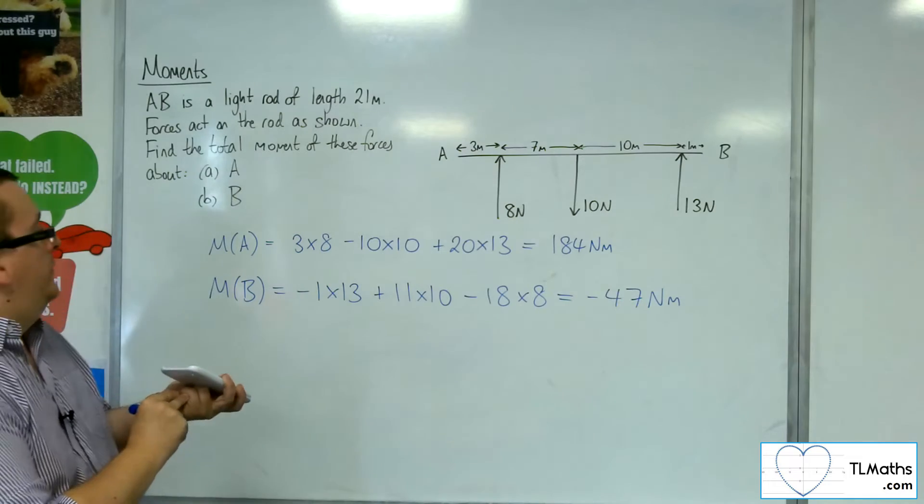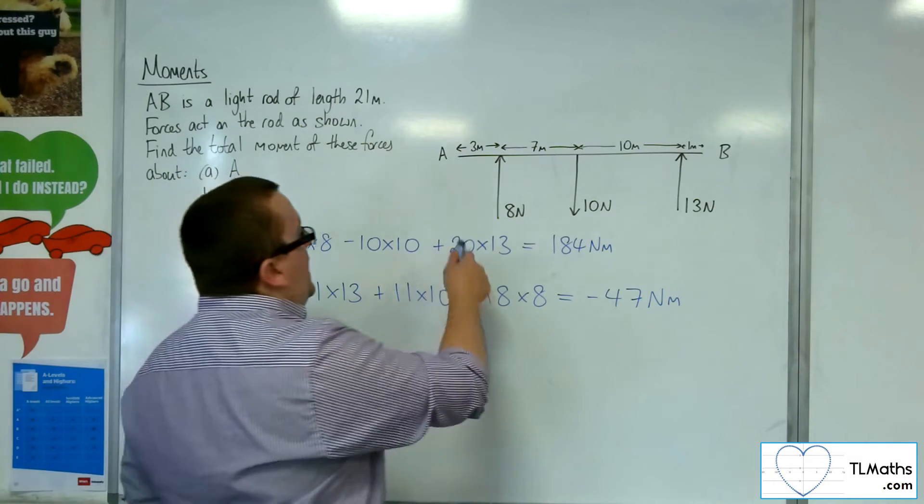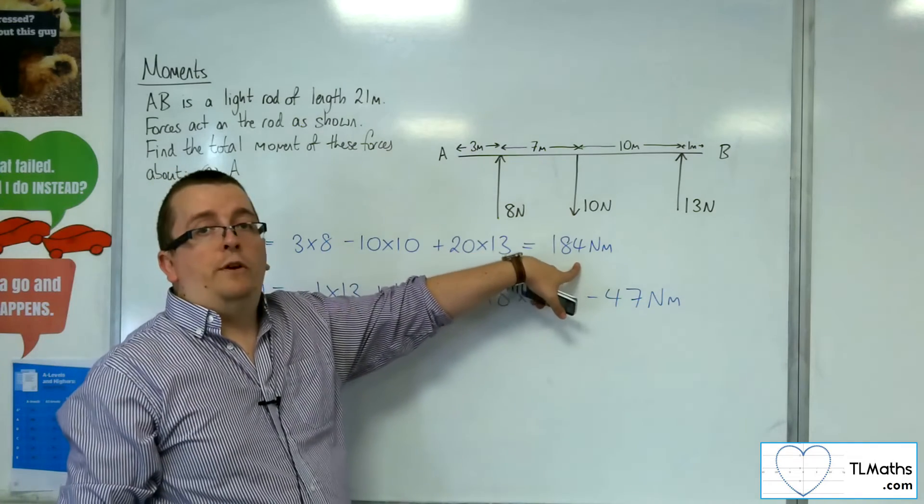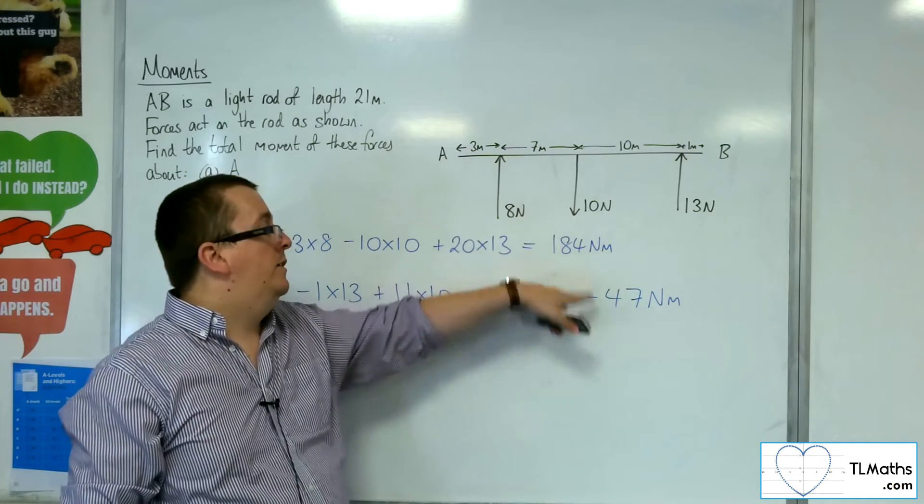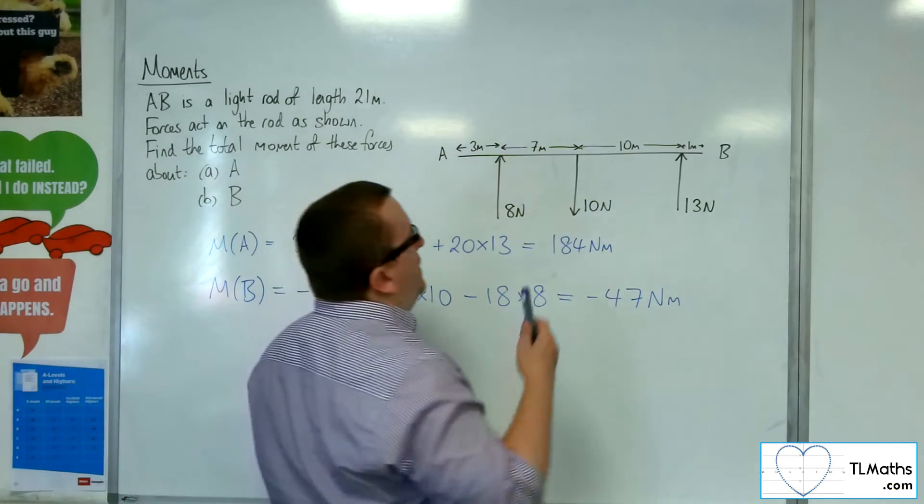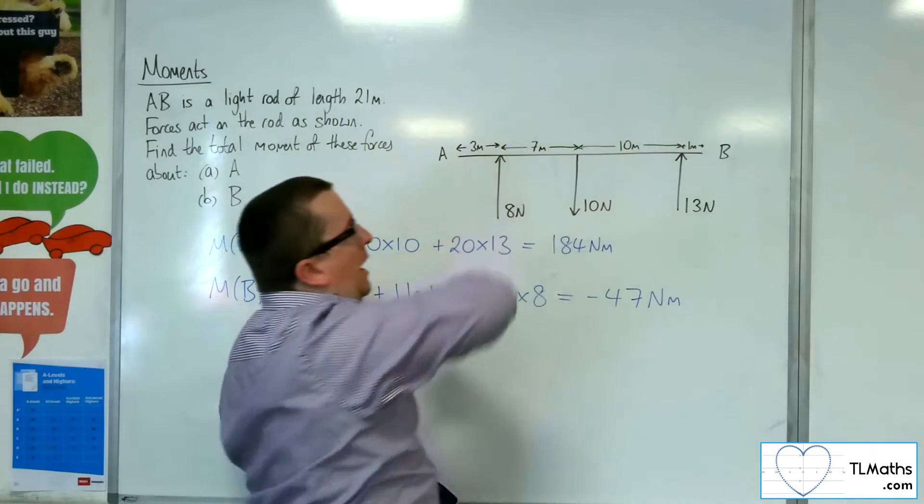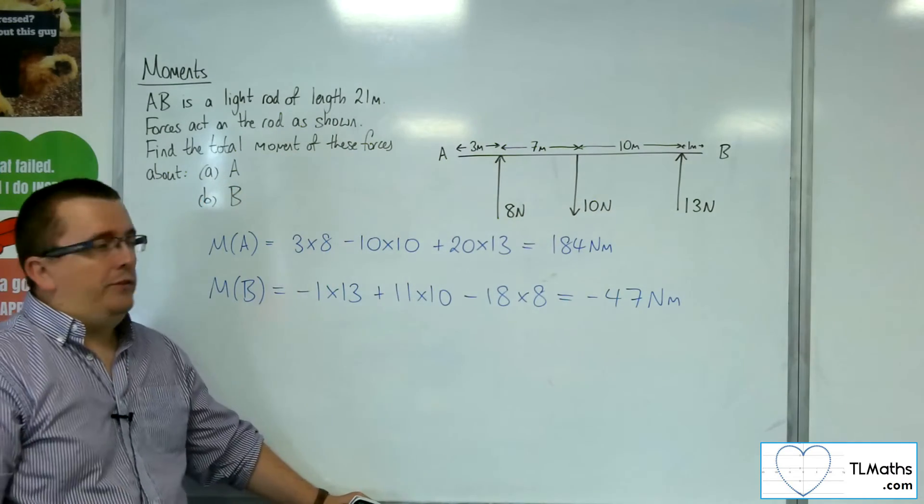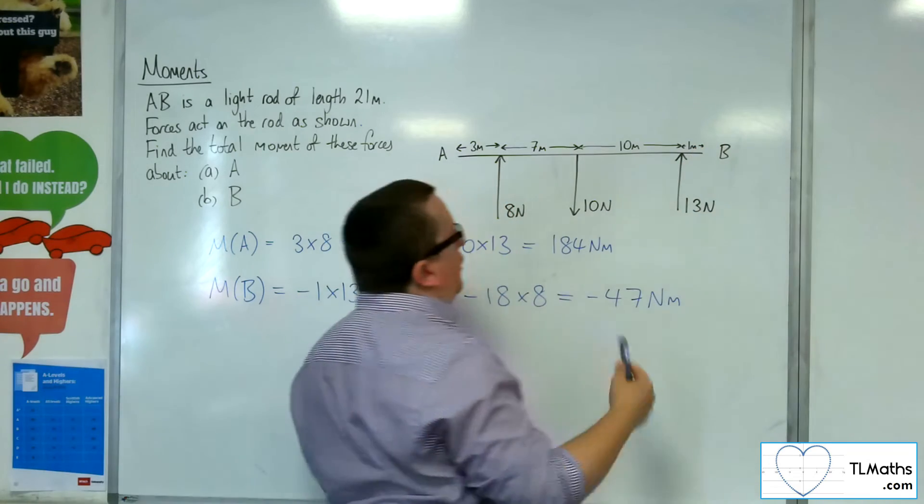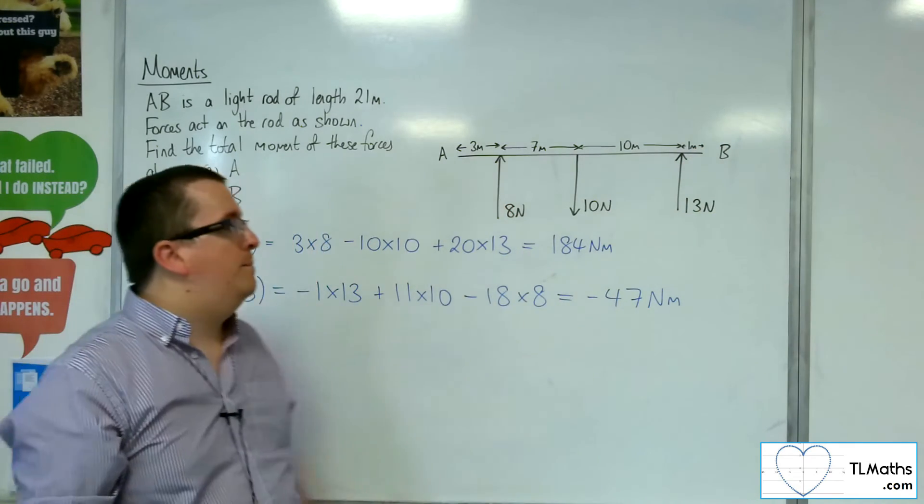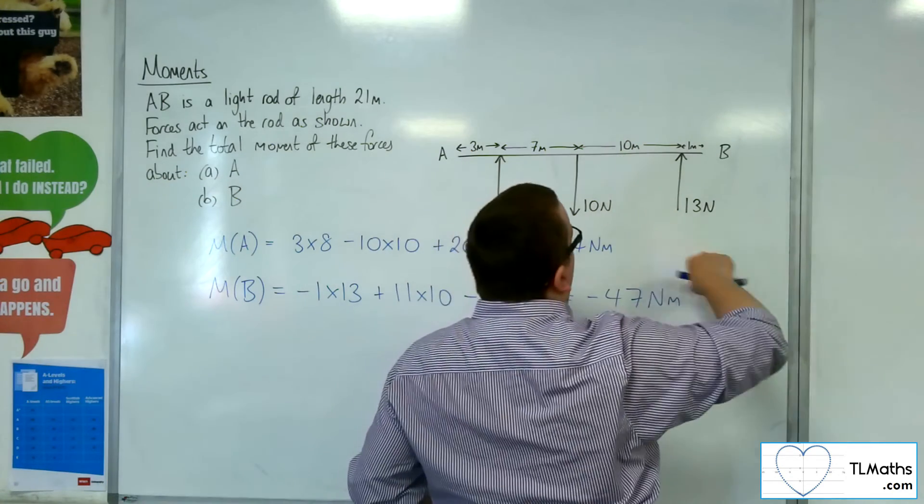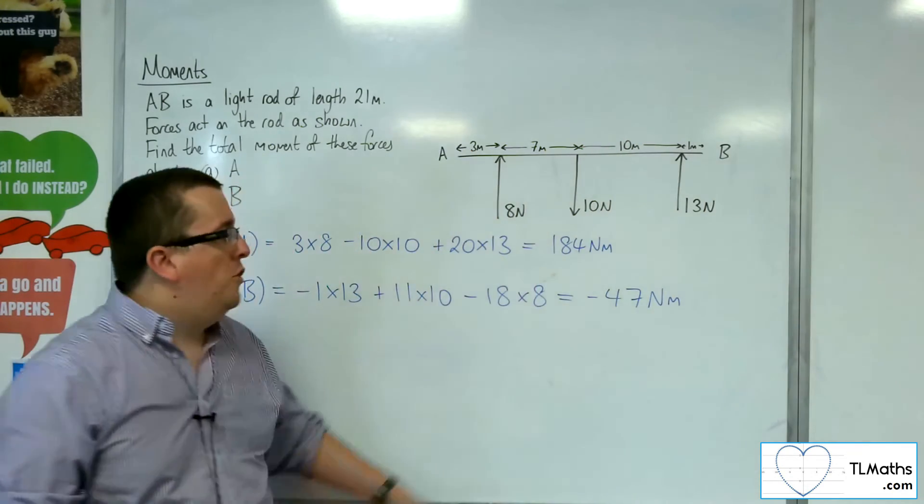So the idea here is that if A was the fixed point, this would be the end result of those 3 forces being applied. We would have 184 newton meters. So the overall force would be pushing it round anti-clockwise, because it's positive. Whereas if we're fixed at B, then those 3 forces will apply minus 47 newton meters total, and so we'd be travelling clockwise round, but not by not so much.